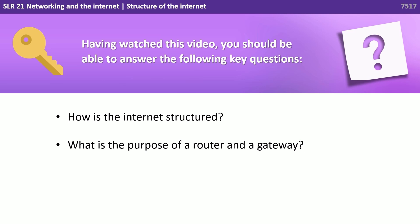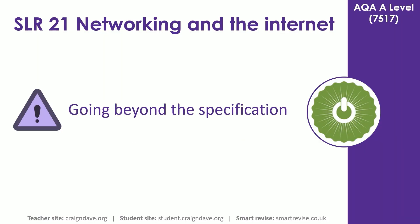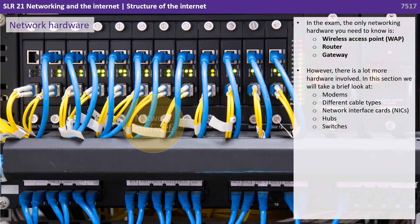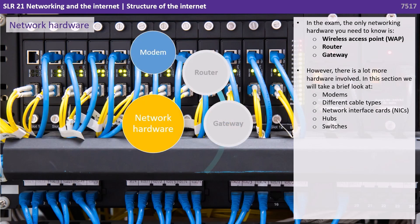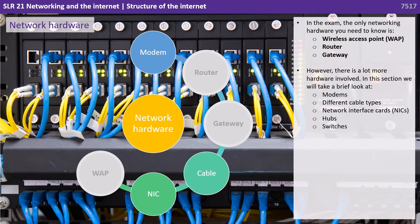Having watched this video, you should be able to answer the following key questions: how is the internet structured, and what is the purpose of a router and gateway? That's all you need to know for the specification. For the exam, the only networking hardware you need to know about is the wireless access point, the router and gateway.